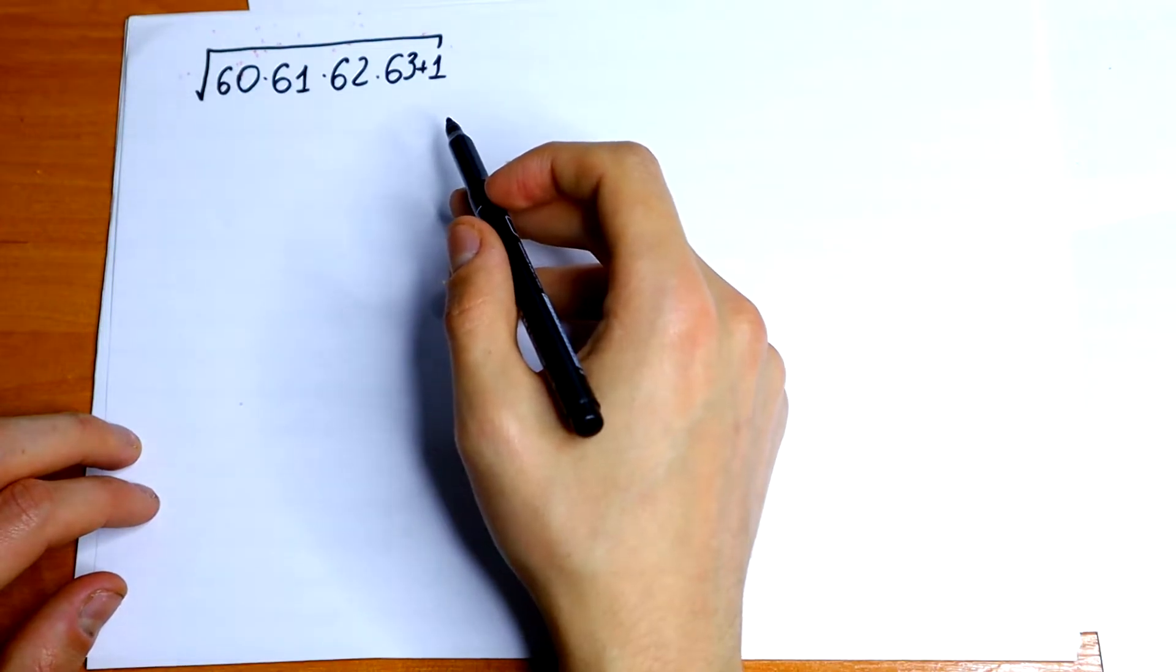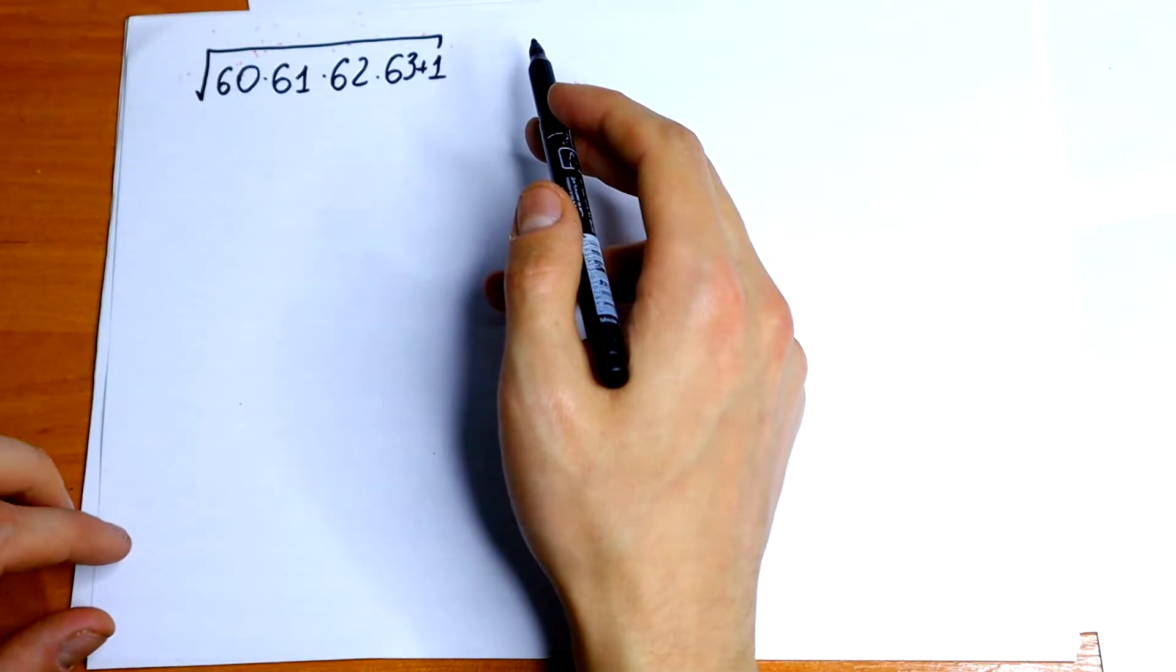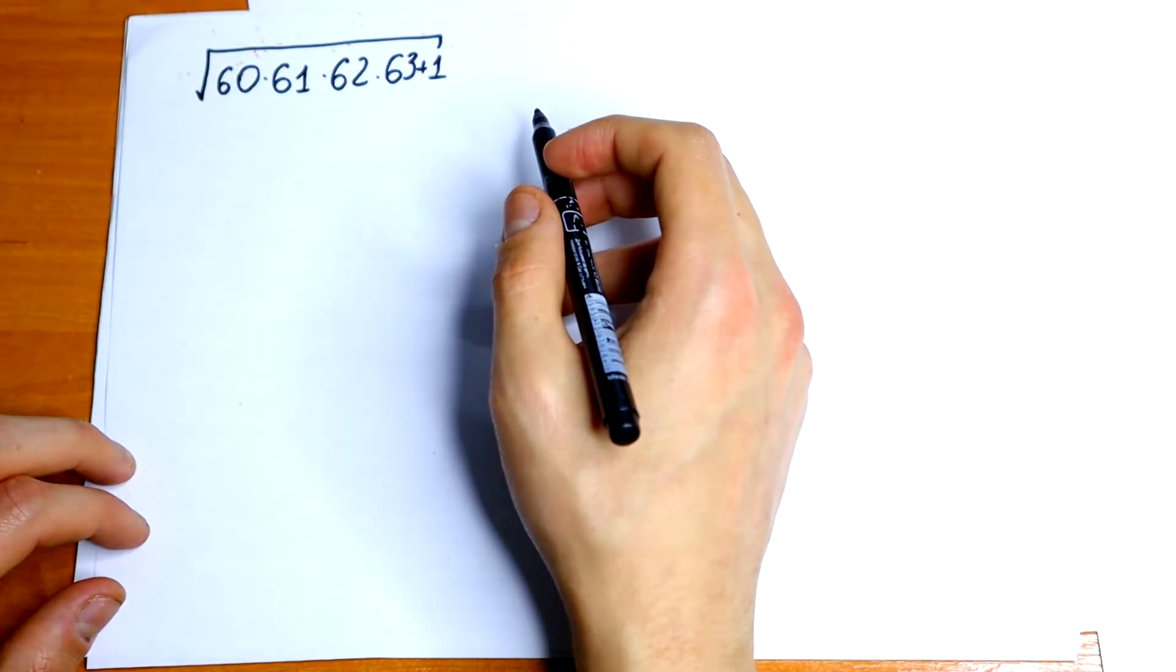On the first side this square root is so hard because we have all different numbers and how can we do with it? I want to suggest you one interesting method how to solve this.